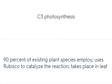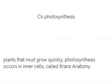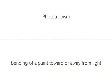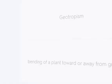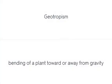C3 photosynthesis is employed by 90% of existing plant species and uses rubisco to catalyze the reaction, taking place in the leaf. C4 photosynthesis is used by plants that must grow quickly; photosynthesis occurs in inner cells called Kranz anatomy. Phototropism is the bending of a plant toward or away from light. Geotropism is the bending of a plant toward or away from gravity.